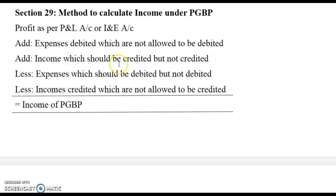Similarly, incomes which should be credited but were not credited in the accounts are added to profits. Then, we subtract expenses which should be debited but were not debited — these leftover expenses reduce your profit. Finally, we subtract incomes that were credited in the accounts but which the IT Act says should not be allowed, subtracting that income from your profit.